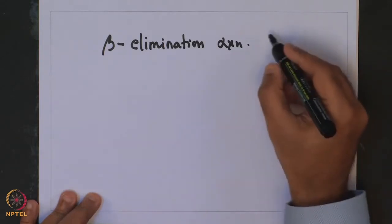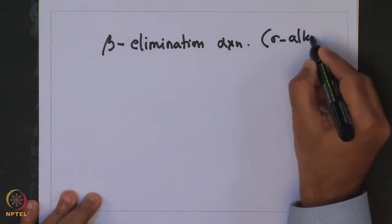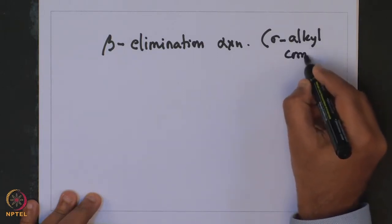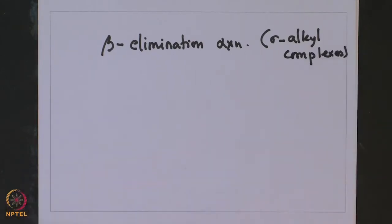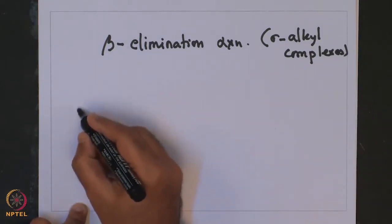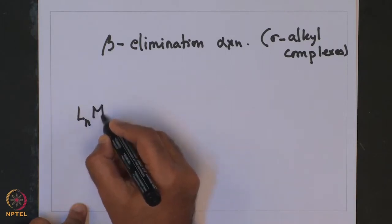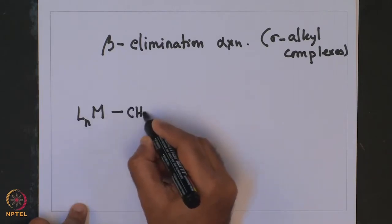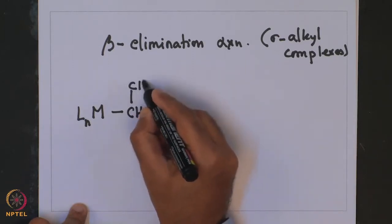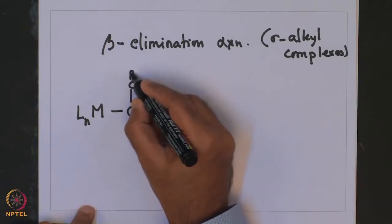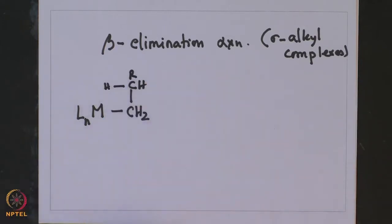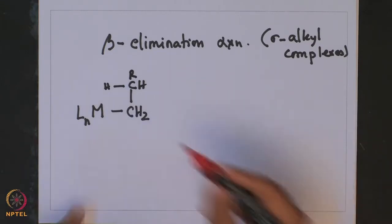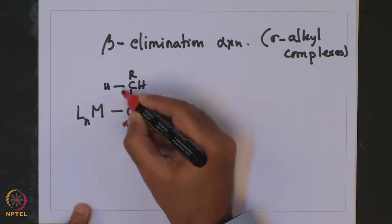These reactions are particularly observed in sigma alkyl complexes. One needs to understand the reason and the mechanism of how this reaction works. For example, transition metal complexes having a beta hydrogen — if I have a transition metal bound to a ligand containing an alkyl moiety which has a beta hydrogen, meaning the hydrogen is located on the beta carbon — this is the alpha carbon, this is the beta carbon.